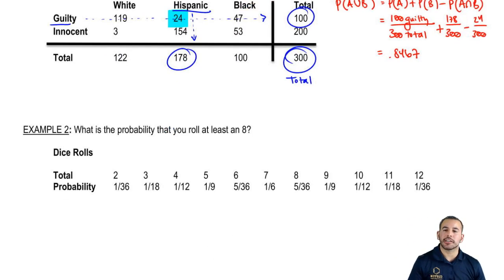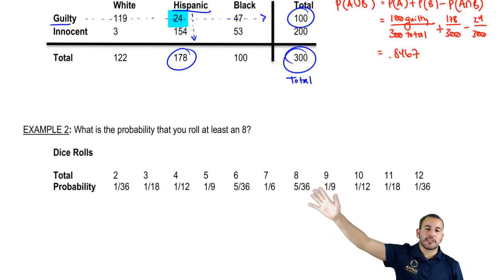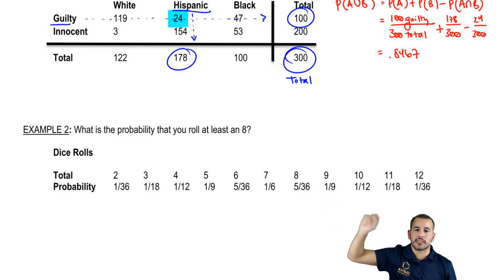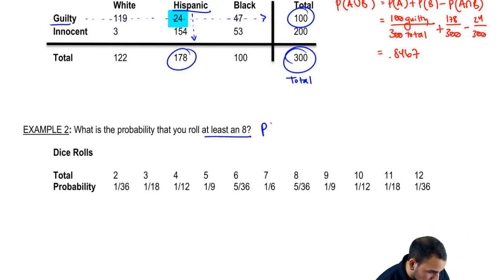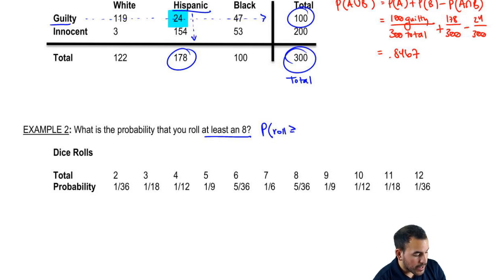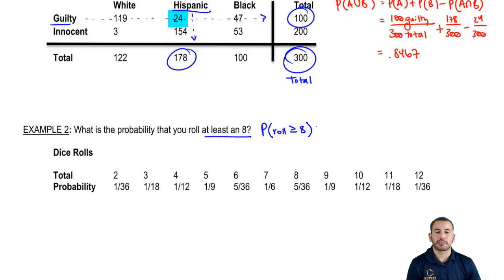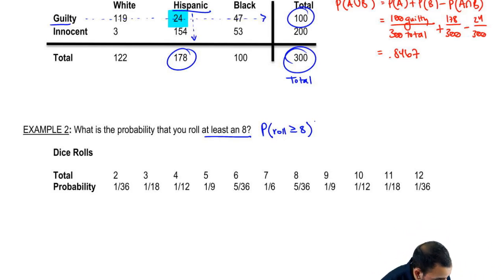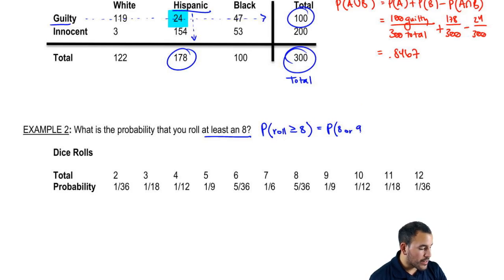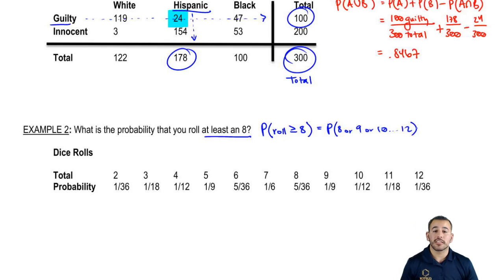Now the next one: what's the probability of rolling at least an eight? Here we're talking about dice rolls — two dice, you toss them out. I gave you a probability distribution, so we already know the probability of rolling each sum: 1/36, 1/18, 1/12, 1/9, 5/36, etc. Rolling at least an eight means we want eight and more — greater than or equal to eight. So we should add them up because we're not talking about separate events. It's either eight or more: probability of eight, or nine, or ten, up to twelve. This is another union problem.